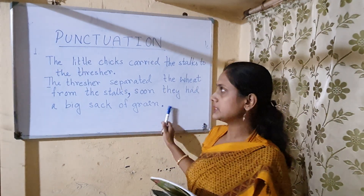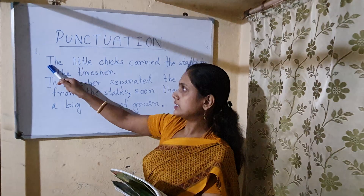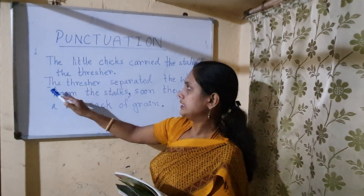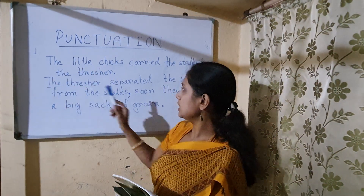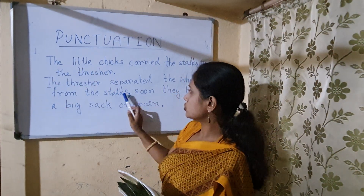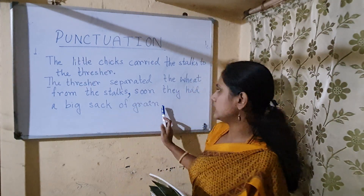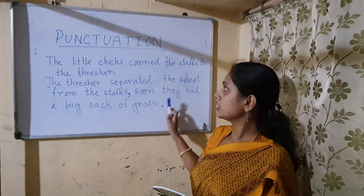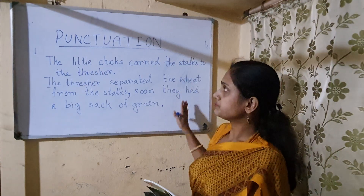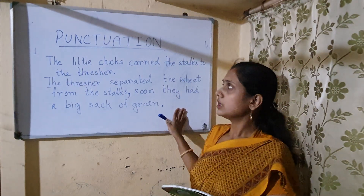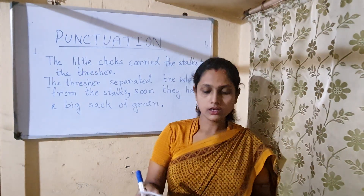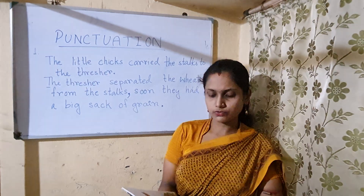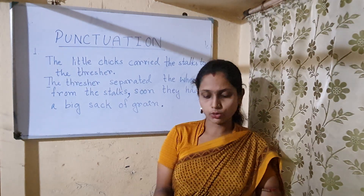Again I am telling you from the beginning. First letter T, capital, then full stop. Here again, first letter capital T. After stalks, comma. Then at the last, full stop. This is the punctuation thing — these are the punctuation marks which I have told you. You will do it properly in your copy.